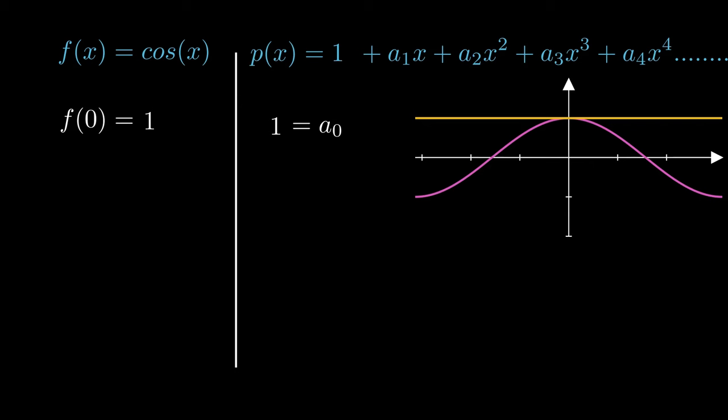Notice this. If we find the first derivative of p of x, the next term a1 becomes free of x. And plugging x equals 0, all other terms vanish except a1. Since the first derivative of cos x at x equals 0 is 0, the first derivative of p of x also should be 0.